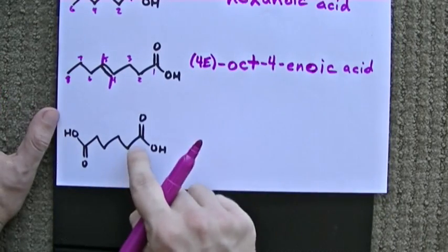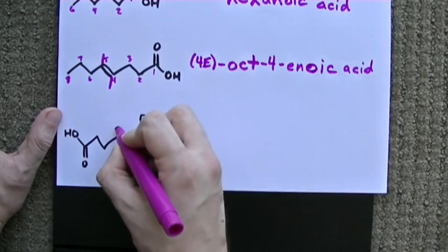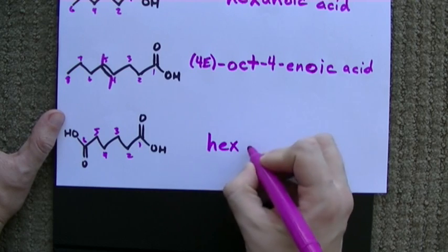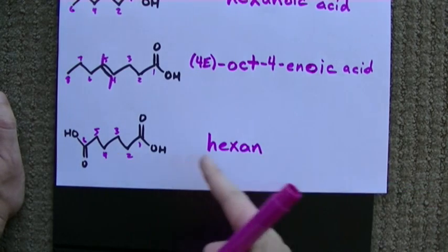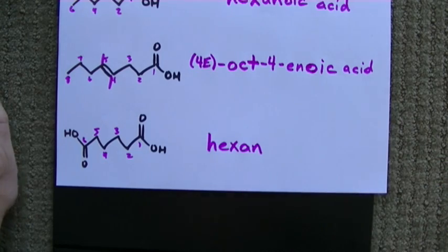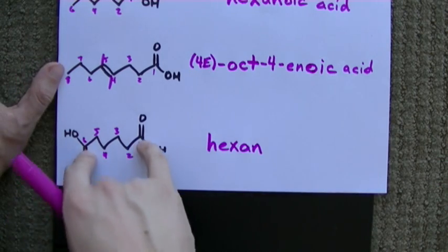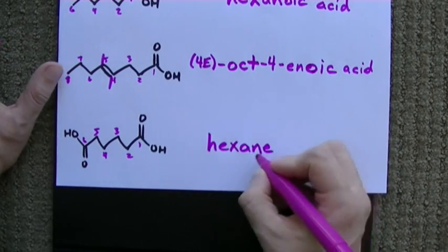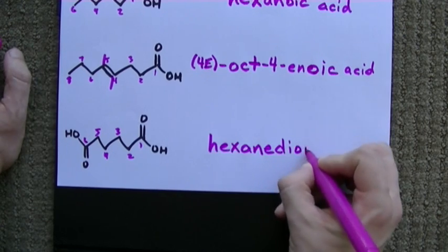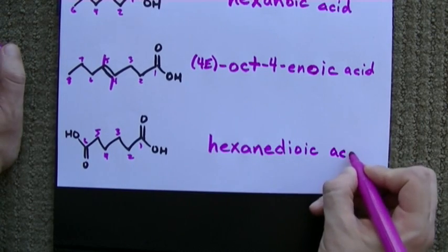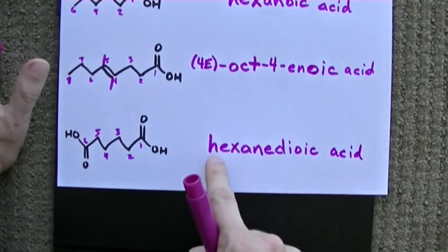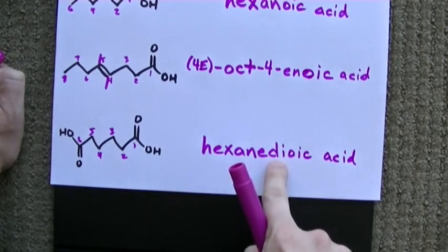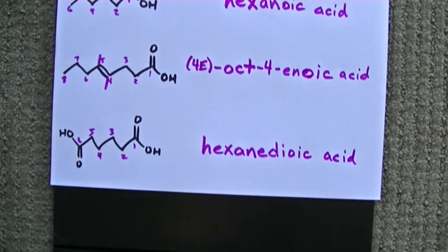And here we have a COOH at both ends. And let me show you how we deal with that. It's still six carbons, and they're all single bonded together. So hexane. But if we have two carboxylic acid groups, and you can't have more than two because there's one for each end, we add the E back in and call it a dioic acid. Hexanedioic acid is a six carbon chain of all single bonds with a COOH at both ends of the molecule.